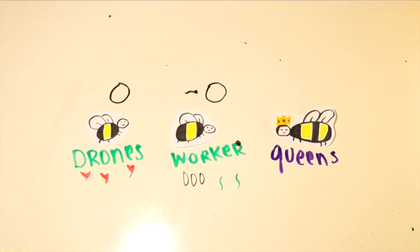The drone's primary job is to mate with the queen bee. Worker bees are sterile females that feed the eggs and find the food. Queen bees are fertile females that lay eggs within the hive.